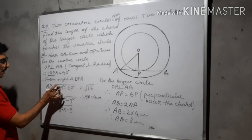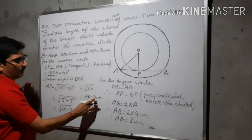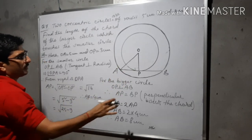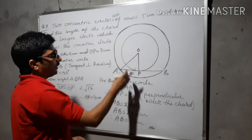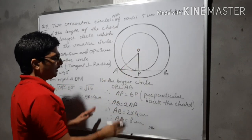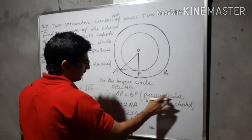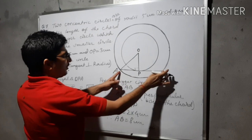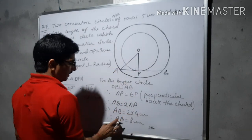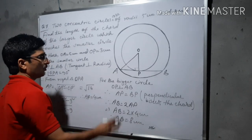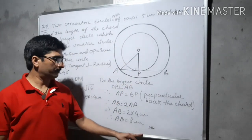Triangle OAP is a right angle triangle. Using Pythagoras theorem, AP equals the square root of OA squared minus OP squared, equals the square root of 5 squared minus 3 squared, which gives AP equals 4 cm. Now in the larger circle, OP is perpendicular to AB, so the perpendicular bisects the chord, meaning AP equals BP. Therefore AB equals 2 times AP equals 2 times 4 equals 8 cm. The length of the chord of the larger circle, which is the tangent of the smaller circle, is 8 cm.